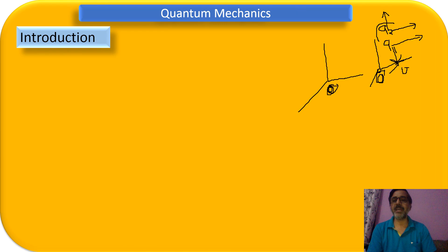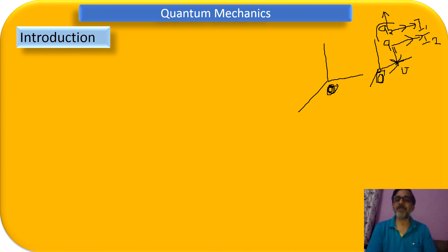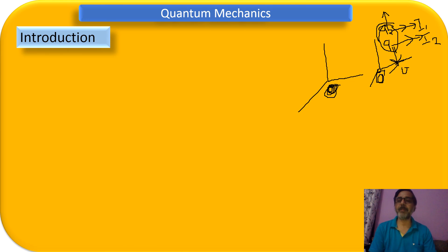But what will observer O see? These two charges are moving with velocity V, so they constitute a current — parallel currents I1 and I2 moving in the same direction. Parallel currents in the same direction attract each other. So the same charges that were repelling each other for observer O dash are attracting each other for observer O. This means the law has not been perfectly explained using Newtonian mechanics — purely classical mechanics applied here does not satisfy the law.